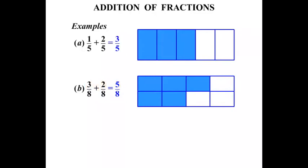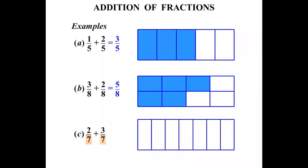Okay. 2/7 plus 3/7. Let's draw a diagram. We're dealing with 7ths. Let's break this up into 7ths. We have 2/7 to start with, and then we have another 3/7.